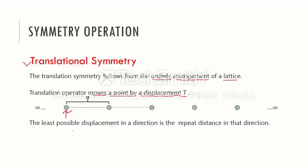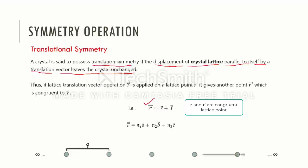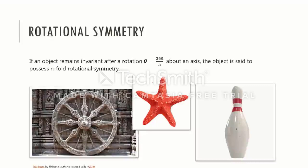In formal language, a crystal is said to possess translational symmetry if the displacement of crystal lattice parallel to itself by a translational vector leaves the crystal unchanged. Therefore, after this operation, the lattice point moves onto an identical or congruent lattice point. Now we will explore rotation symmetry operation.